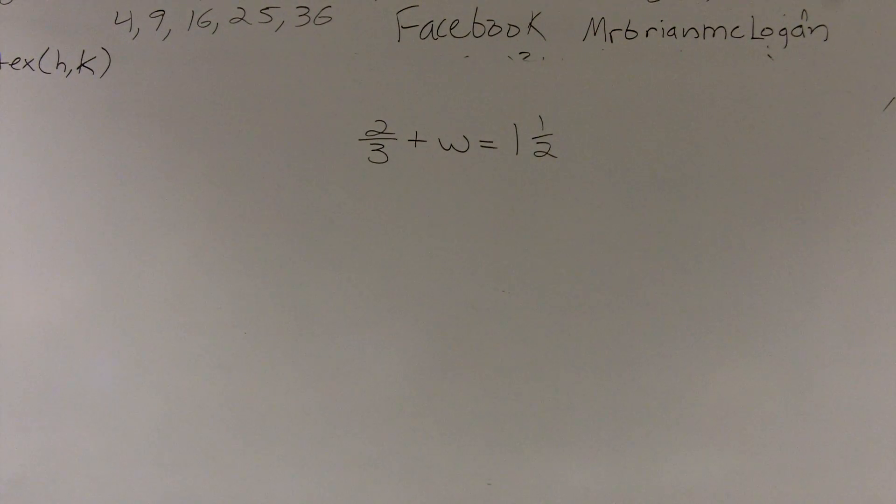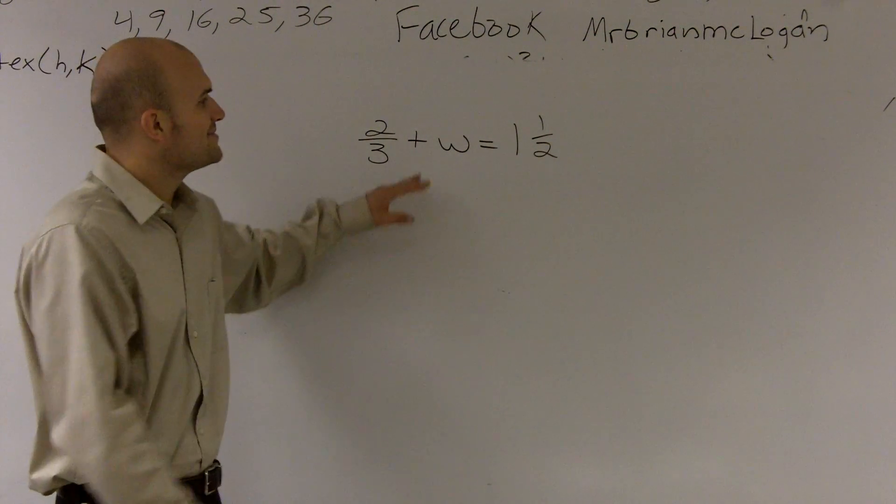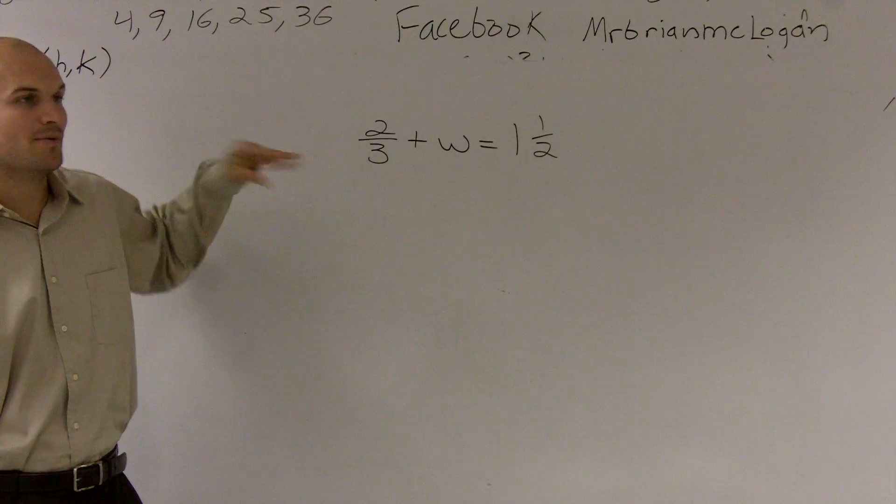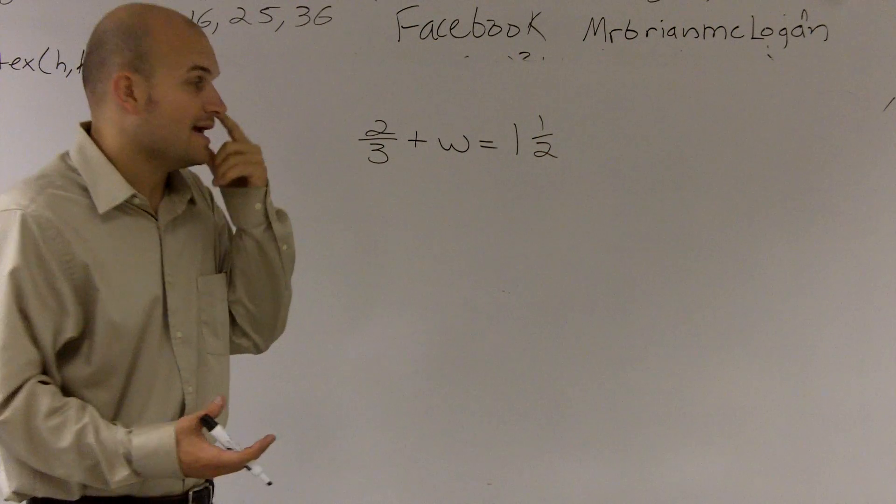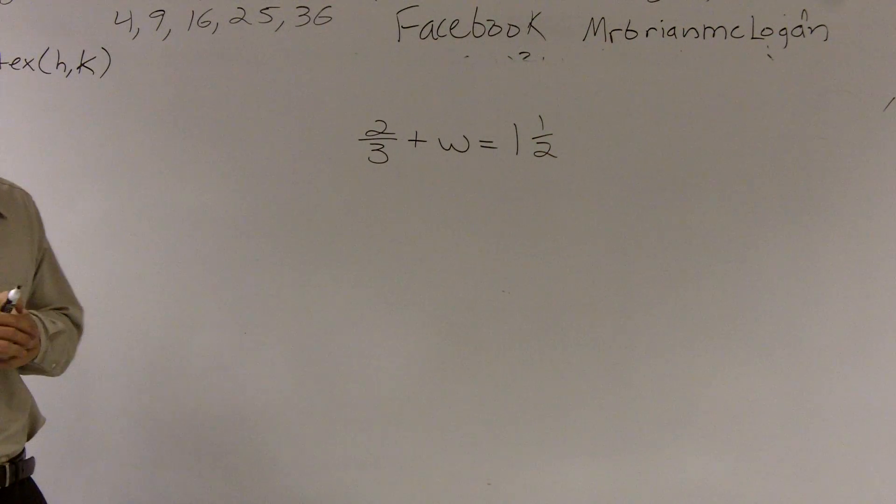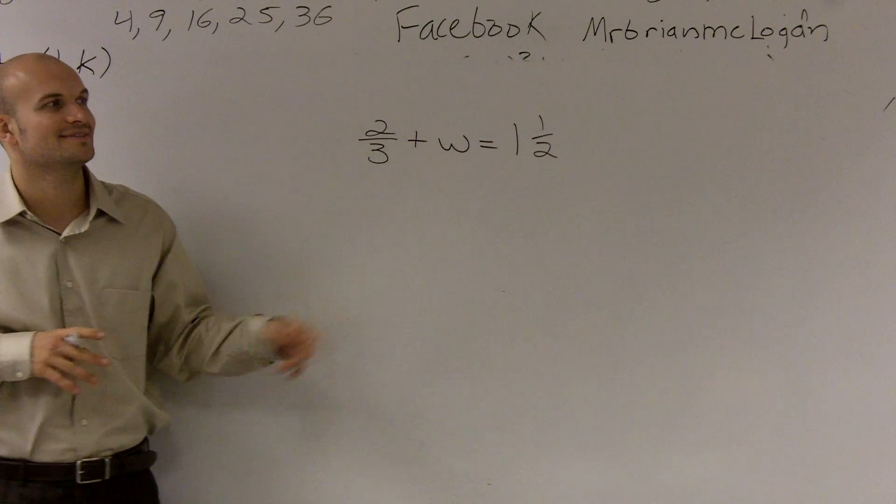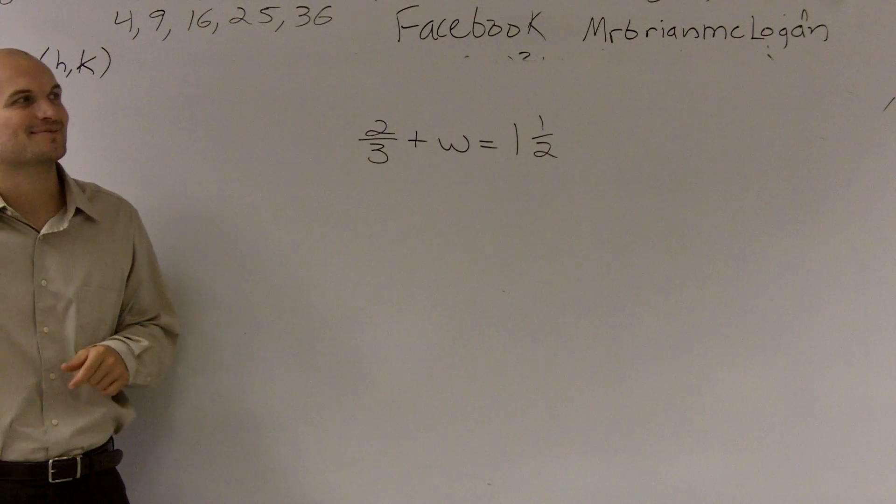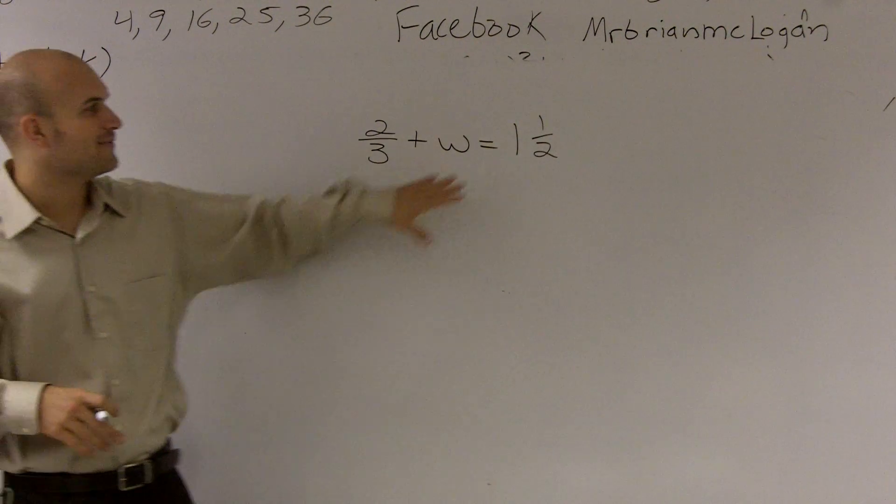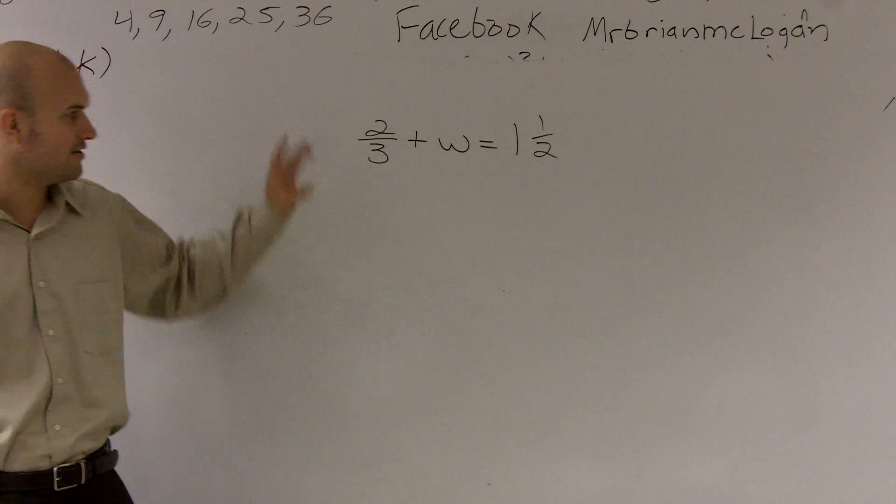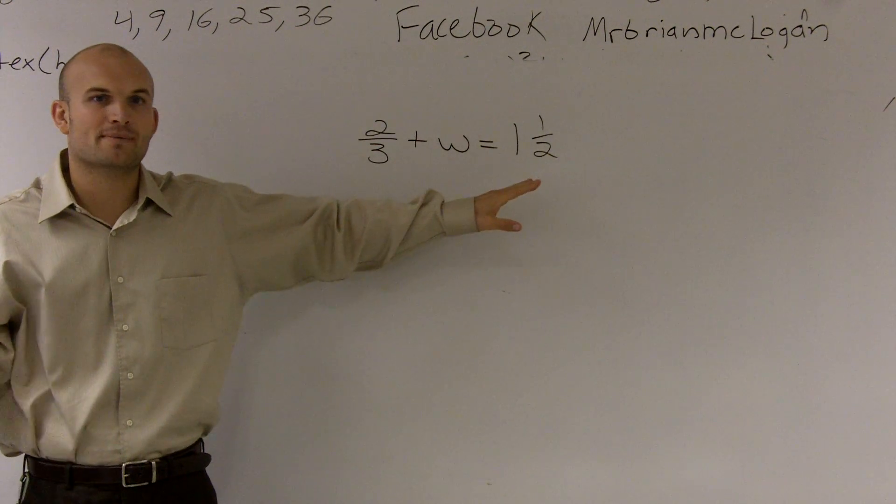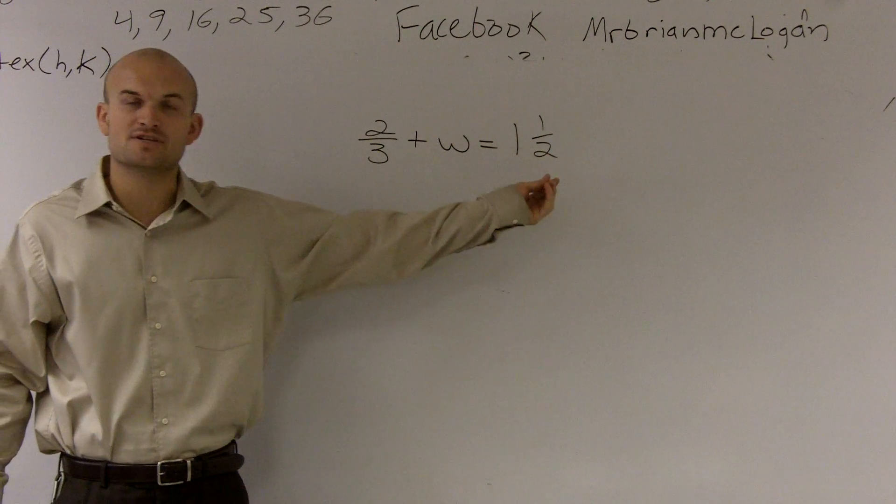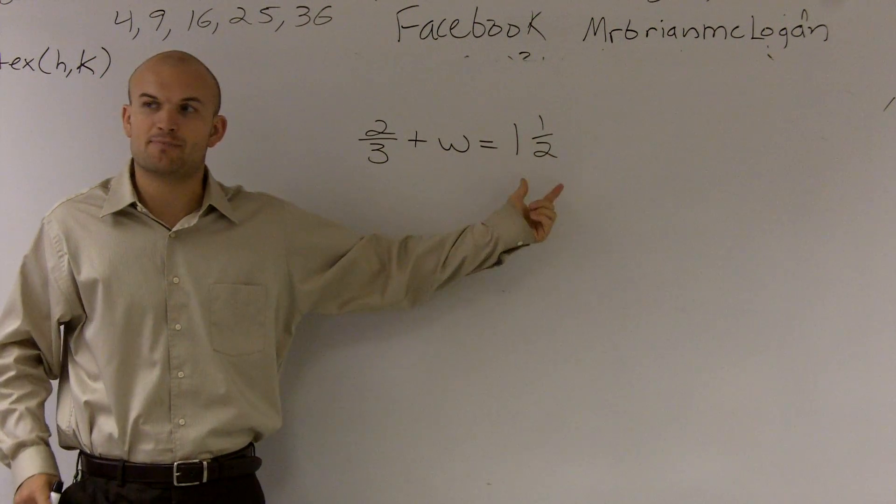All right, so on this problem what we need to do is we need to solve for w. So this is a one step equation, and when we're solving for this equation, there's a couple things I noticed. Here I have a fraction, and then here I have a mixed number. So what I'm going to want to do is I'm going to want to change, first of all, my mixed number into an improper fraction.